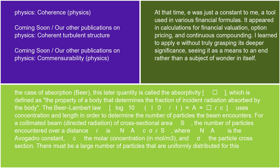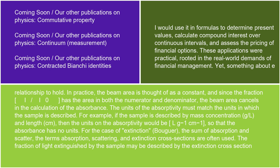For a collimated beam of directed radiation with cross-sectional area S, the number of particles encountered over a distance is N_A·C·σ·S, where N_A is the Avogadro constant, C is the molar concentration in mol/m³, and σ is the particle cross-section. There must be a large number of particles uniformly distributed for this relationship to hold. In practice, since the fraction I/I₀ has the beam area in both numerator and denominator, the beam area cancels in the calculation of the absorbance.